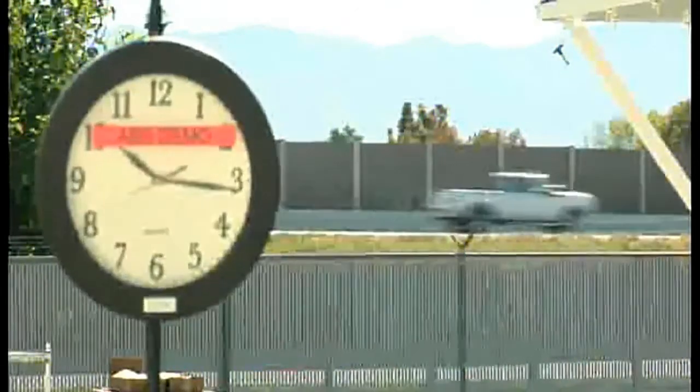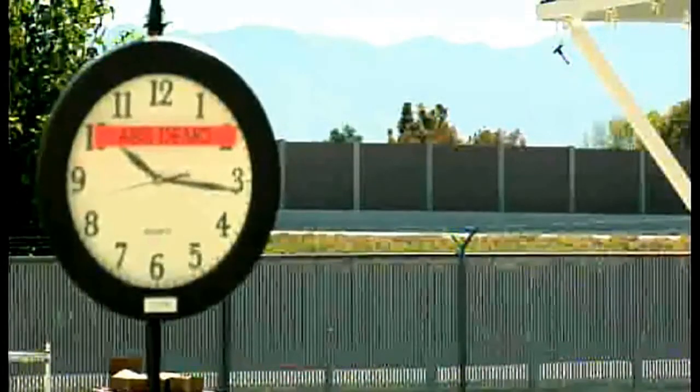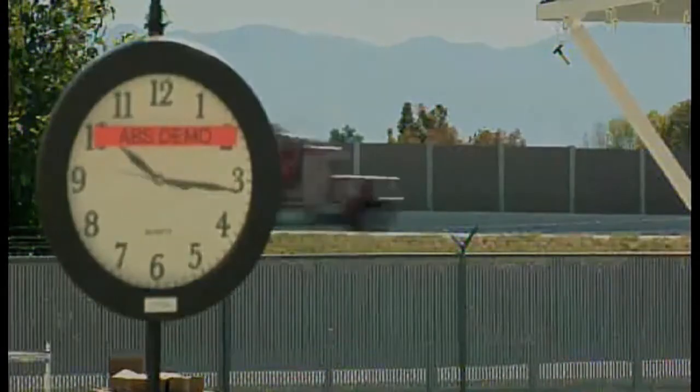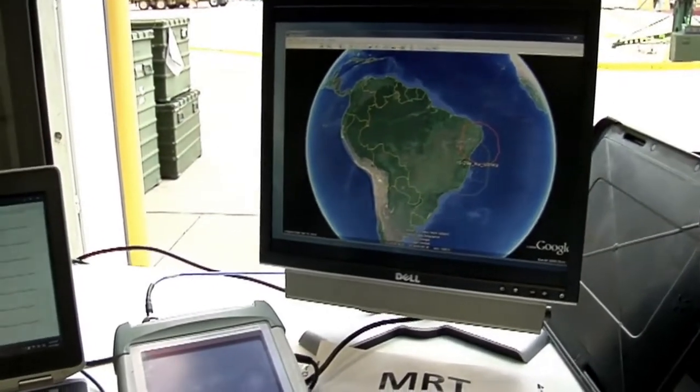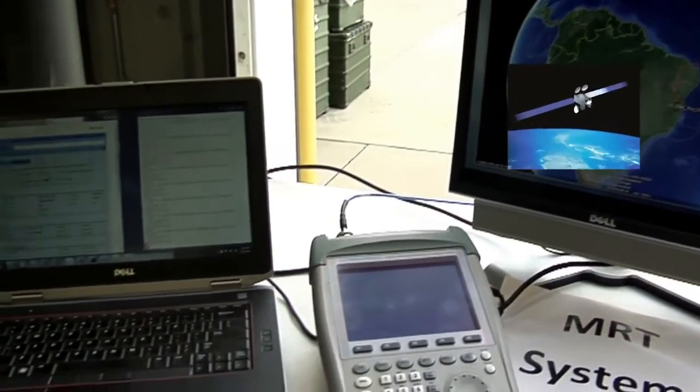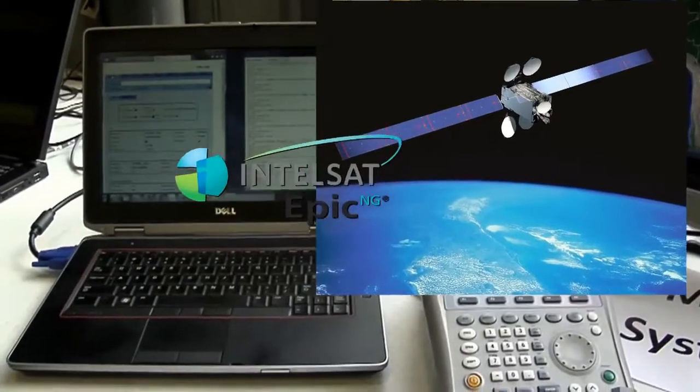And the video resumes after the transition. This demonstration shows that the automatic beam switching software enables customers to use their current equipment to automatically switch both frequency and polarization to maximize their use of the satellite.